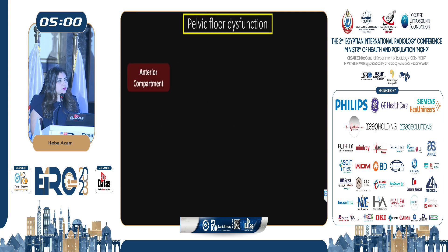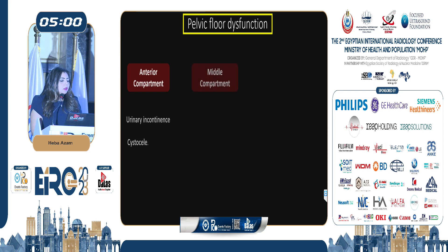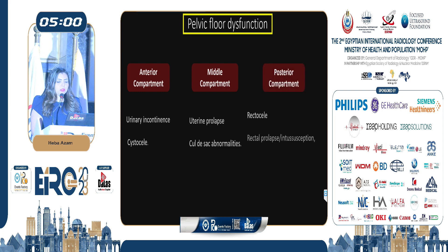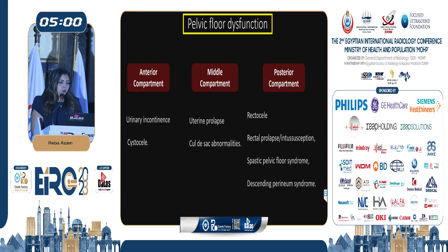Pelvic floor dysfunction can affect the anterior compartment in the form of cystoceles and urinary incontinence, the middle compartment in the form of uterine prolapse and cul-de-sac abnormalities, and the posterior compartment in the form of rectocele, rectal prolapse, intussusception, spastic pelvic floor syndrome, and descending perineal syndrome.